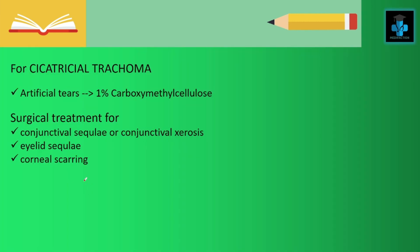In case of cicatricial trachoma, artificial tears can be suggested such as 1% carboxymethyl cellulose. Surgical treatment can be applied in case of conjunctival sequelae, conjunctival scarring, eyelid sequelae, and corneal scarring.